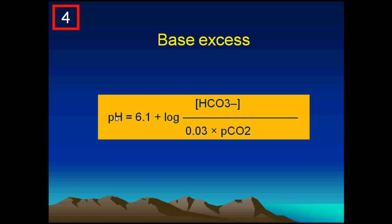A question came up: what will happen if the partial pressure of carbon dioxide returns back to normal, which is 40? This means that if there is still a change in the pH, for sure this will be the result of bicarbonate change. Imagine that the partial pressure of carbon dioxide is mathematically restored to 40 and its impact on the pH has been corrected, and still the pH is high. This means that bicarbonate is high, so there is base excess.